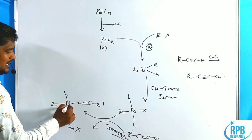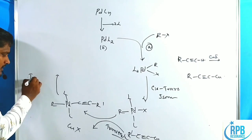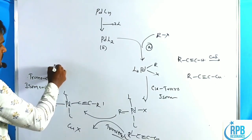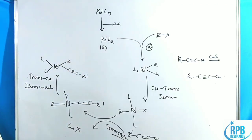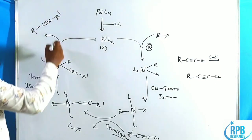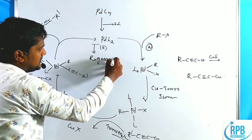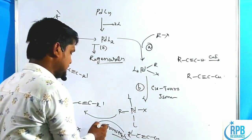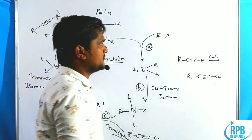After transmetallation, trans-to-cis isomerization takes place, giving Pd(L)2(R)(C≡C–R'). Finally, reductive elimination gives R–C≡C–R' as the product and regenerates the palladium catalyst. The catalytic loop involves: first step — oxidative addition; second step — cis-to-trans isomerization; third step — transmetallation; fourth step — trans-to-cis isomerization; fifth step — reductive elimination.